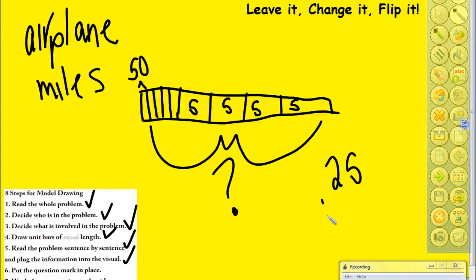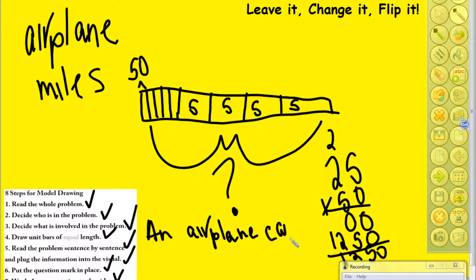We're going to do 25 times 50. 5 times 0, 0. 2 times 0, 0. 0. I'm sorry. 0. 5 times 5, 25. 2 times 5, 10. Plus your 2 more, 12. So our answer is 1,250. So answer the problem in a complete sentence. What we're going to do is, an airplane can travel 1,250 miles in 5 hours. And that answers our question. So we know we are done.